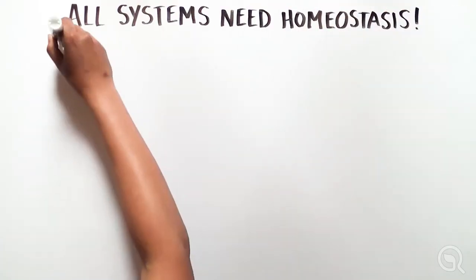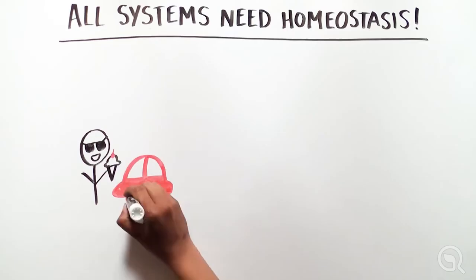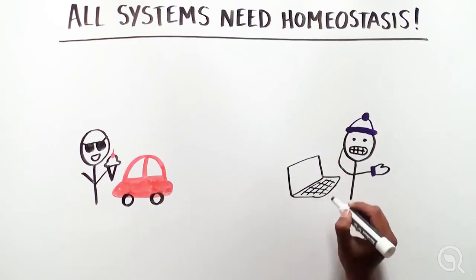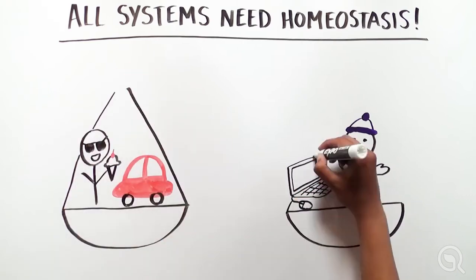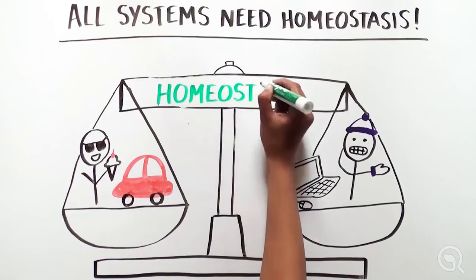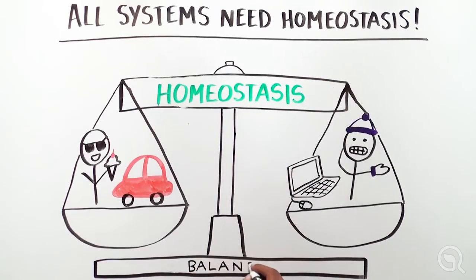As you can see, homeostasis is essential to our overall health. But actually, all systems, like cars and computers, use these similar mechanisms to function normally. So the governing principles of homeostasis ensures that not only we, but also the world around us, is always in balance.